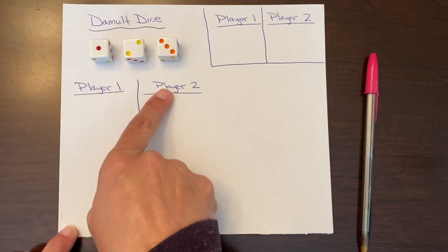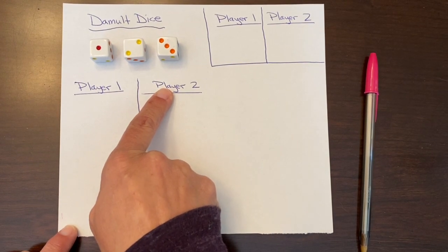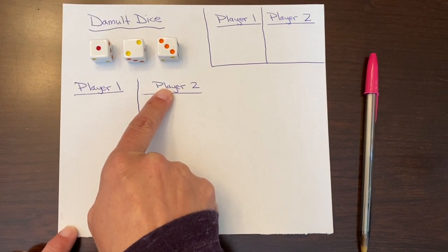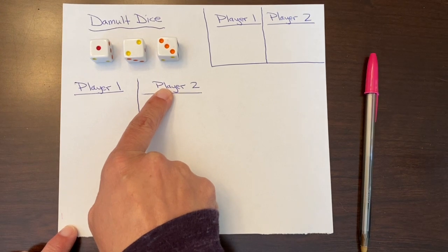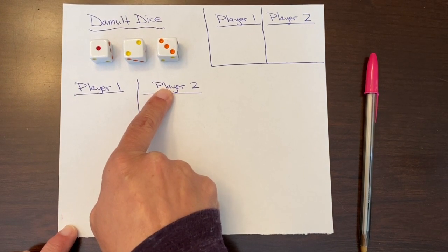Okay, so we're gonna roll all three dice and we are going to choose two of the dice to add, and then we are going to take that sum and we are going to multiply it by the third die.